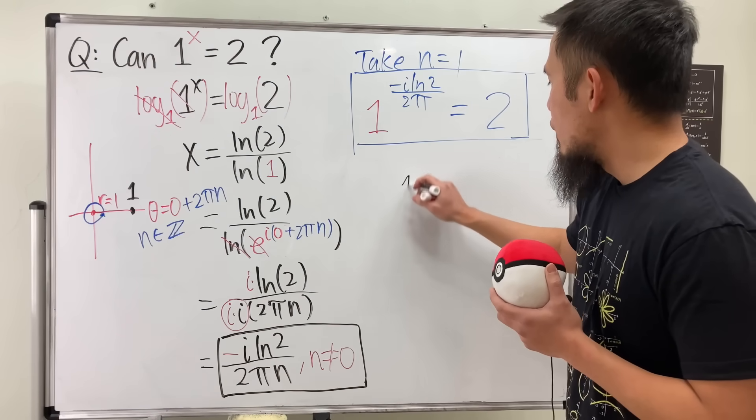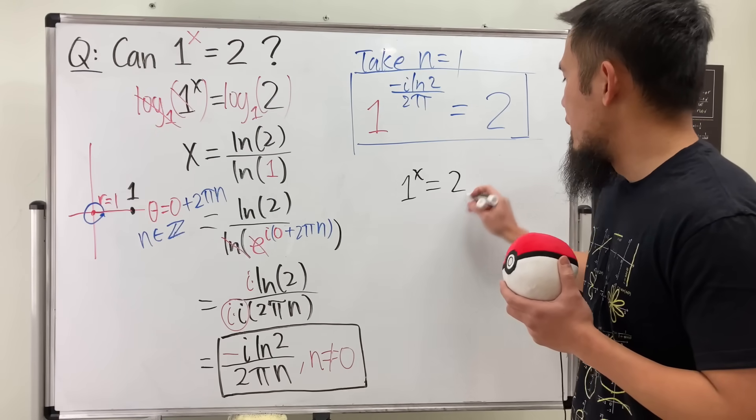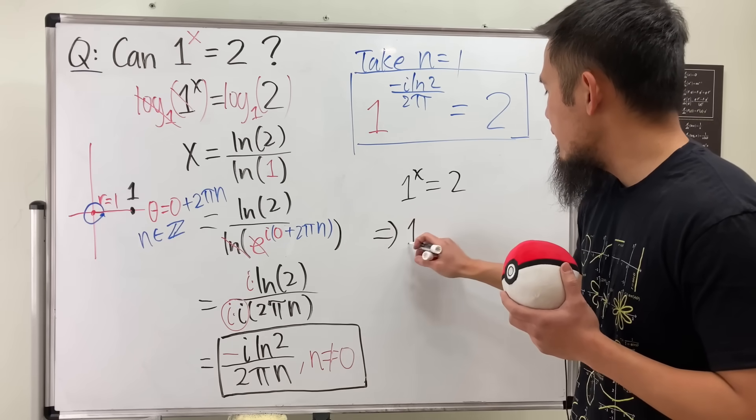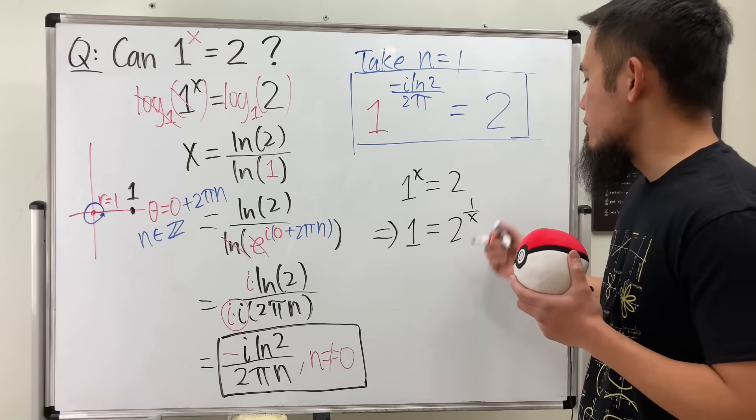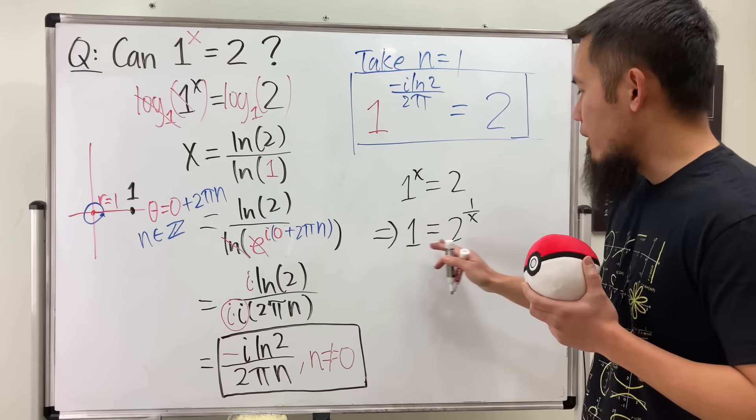However, if you look at 1 to the x power equals 2 as 1 equals 2 to the 1 over x power—namely, just take the xth root on both sides—if you enter this on WolframAlpha, it actually works.